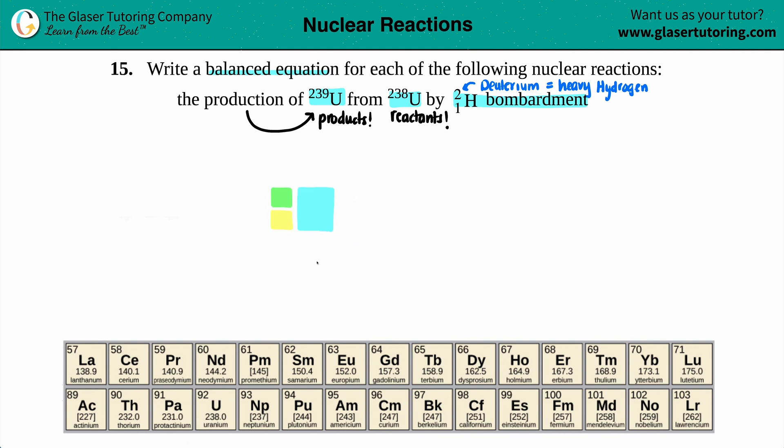We generally will have one big box indicating the element or the atom that we're talking about, and then we have two numbers, one on the top, one on the bottom. The top numbers are always going to be talking about the atomic mass, while the bottom numbers are always the atomic numbers.